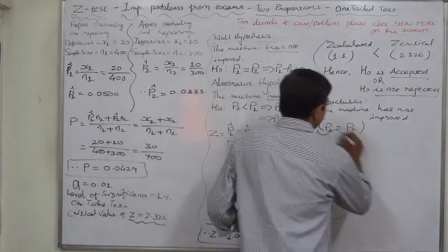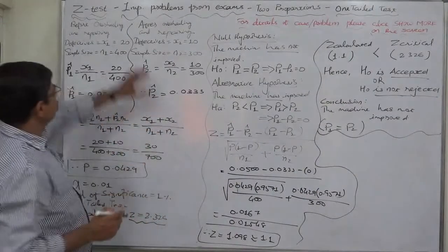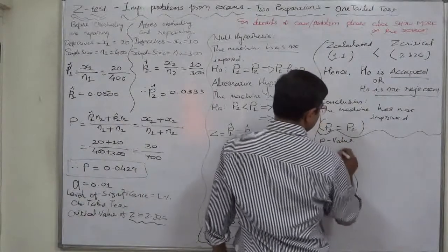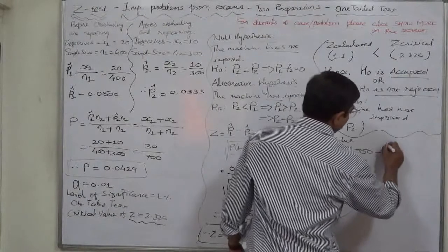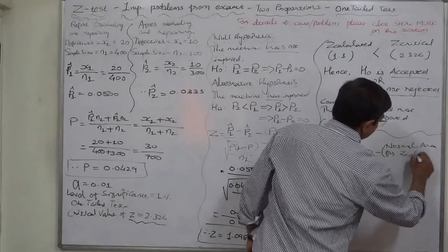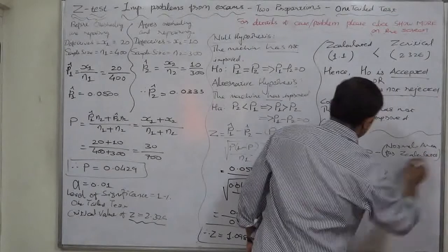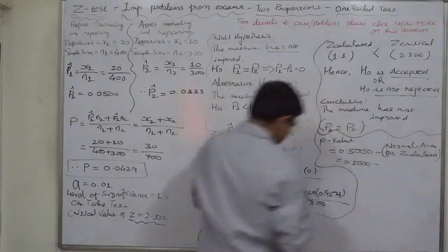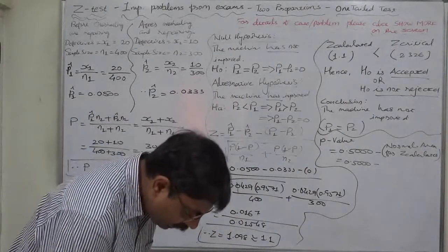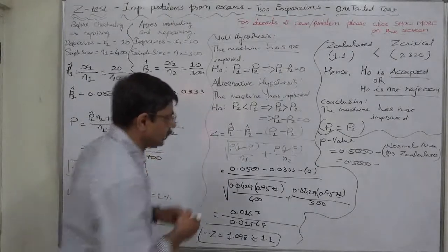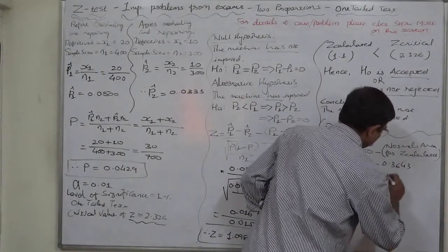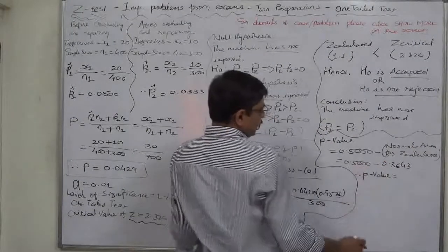Let's also calculate the p-value, since this is the last Z test case in our series. The p-value equals 0.5 minus the normal area for Z_calculated = 1.1. The area for Z = 1.1 is 0.3643, so p-value = 0.5 − 0.3643 = 0.1357.